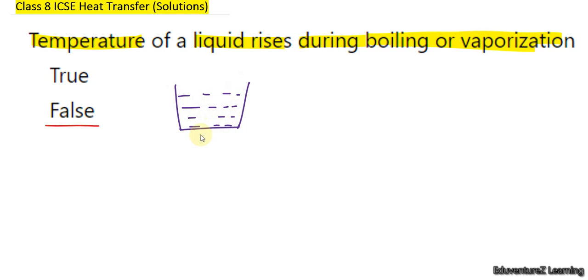Suppose you are boiling water present in a container. You are supplying heat and you are boiling this water. When you supply heat to this water, its temperature is suppose 30 degrees Celsius. We know that water boils at 100 degrees Celsius.